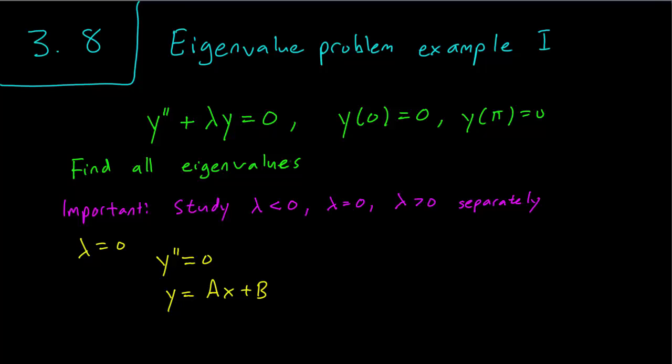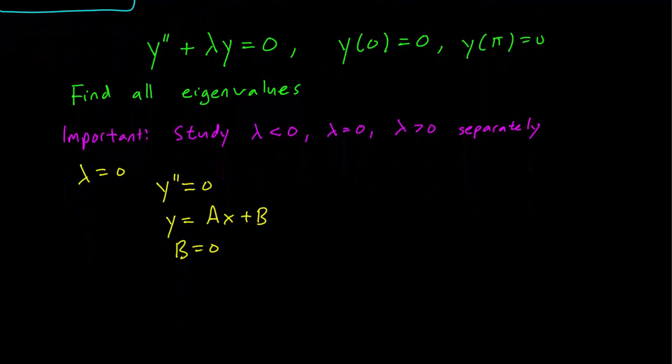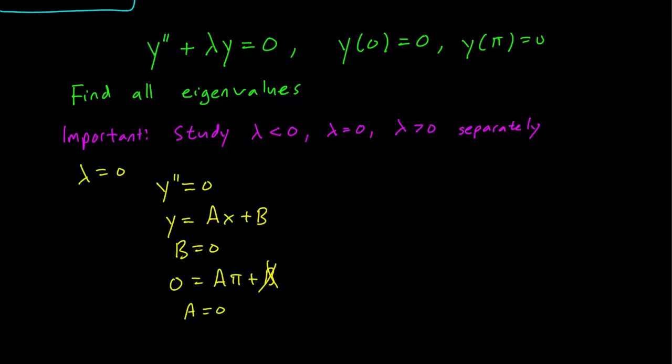This is our general solution. Let's plug in our initial conditions. When x equals zero, y equals zero, so this means B equals zero. And when x equals pi, y equals zero. So this means that zero equals A pi plus B. But we know that B is equal to zero, so A pi is equal to zero and hence A is equal to zero. We only have one solution, but this implies that lambda equals zero is not an eigenvalue. Alright, that was easy enough.